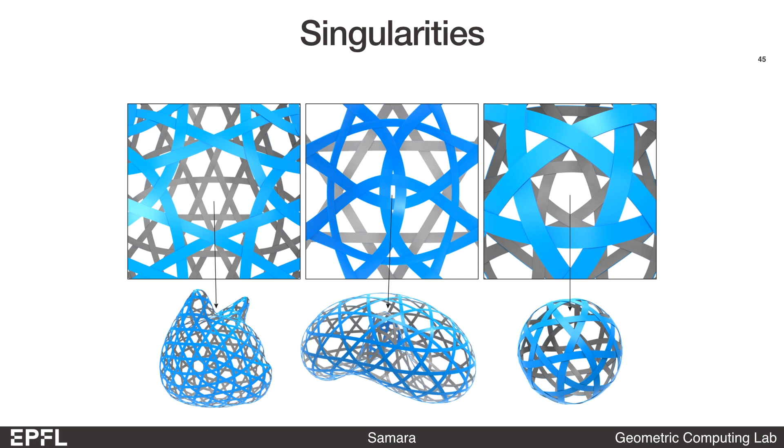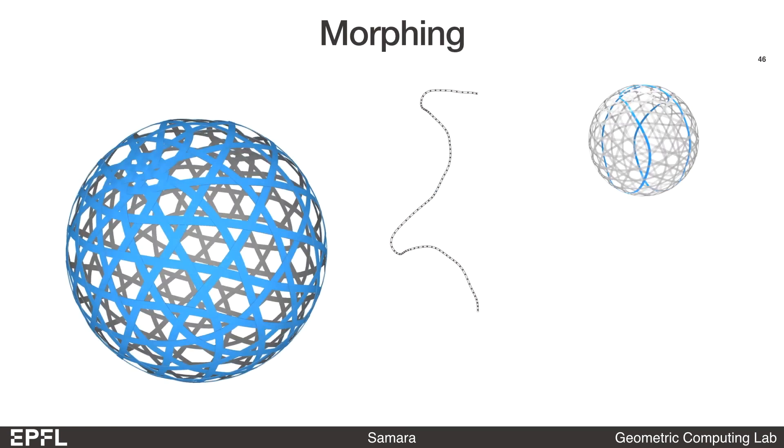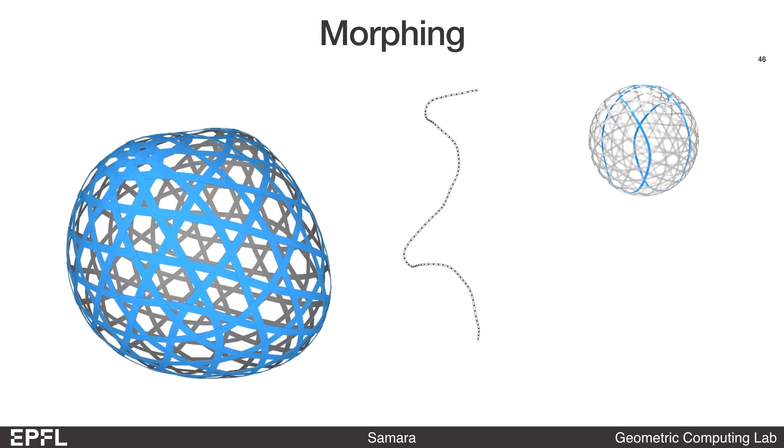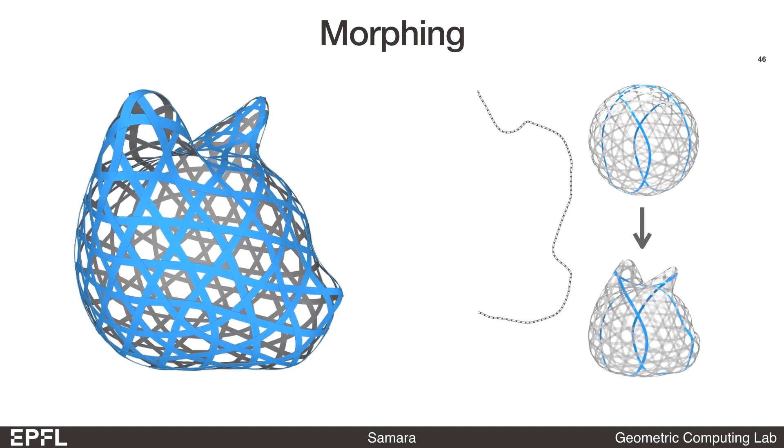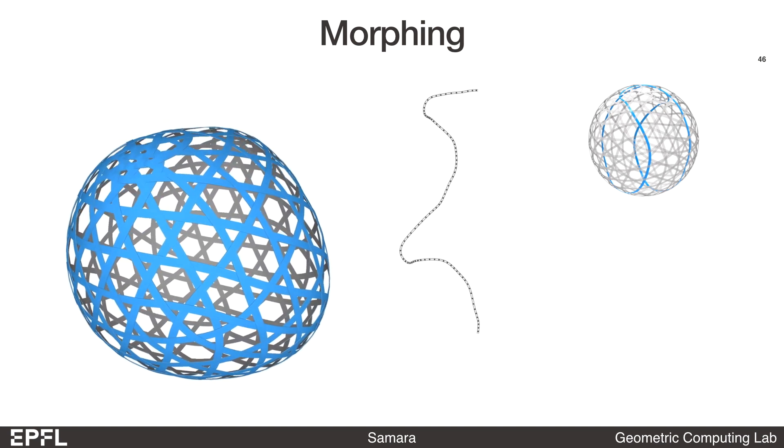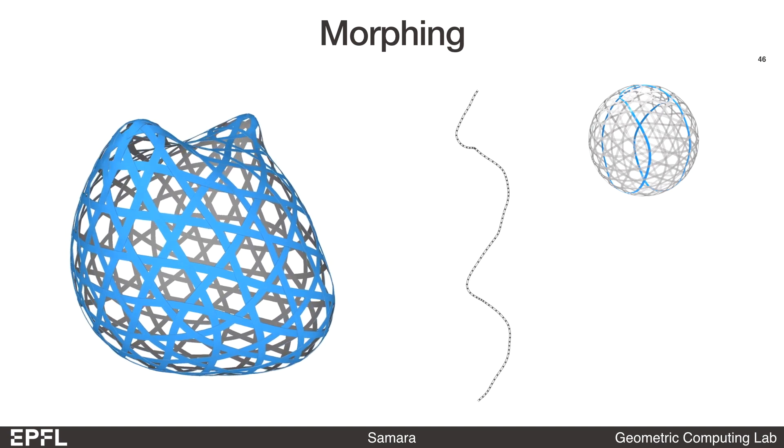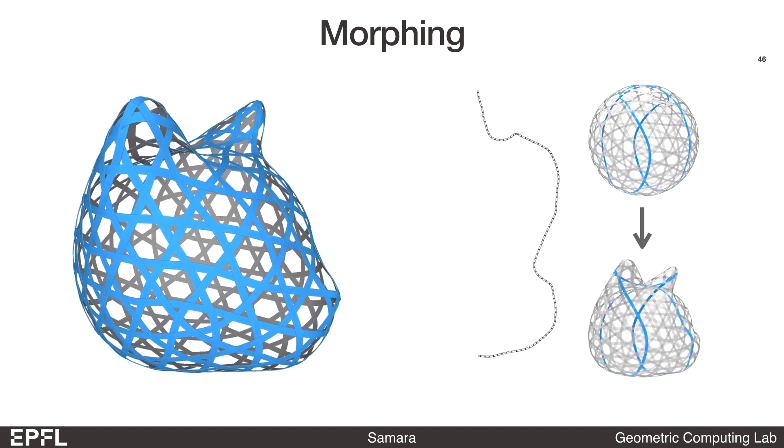Of course, singularities can still be helpful in curved ribbon weaving, either out of necessity for target shapes of spherical topology, or they can be used to control the weaving pattern. Here is a fun example where we can morph a sphere into a cat continuously by changing the curvature of the ribbon without changing the topology of the weave. It exploits the fact that curved ribbon weaving can change the 3D curvature continuously, which is not possible for straight ribbons.